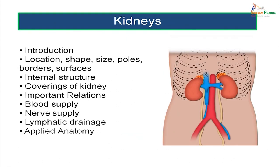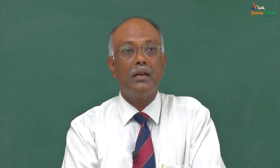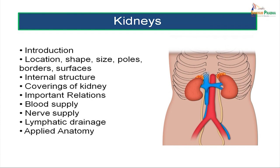This lesson on the kidneys will be dealt with in the following subheadings. We will first have a brief introduction, then see the location, size, shape, poles, borders, and surfaces. Then we will review the internal structure of the kidney, followed by the coverings of the kidney, the important anatomical relations — anterior and posterior. We will review the blood supply, nerve supply, lymphatic drainage, and finally the applied aspects of the kidneys.